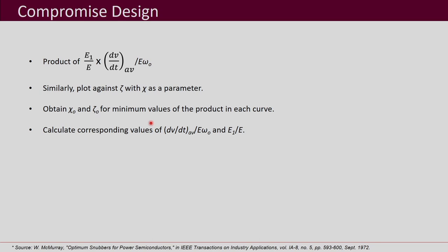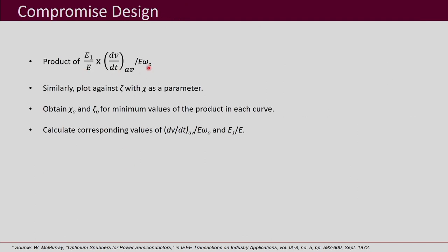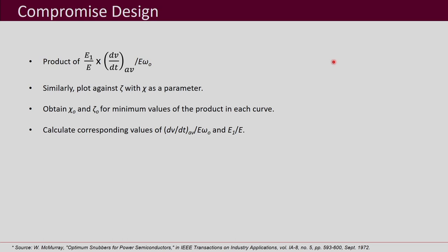We note down the corresponding value of the product and also the corresponding values of zeta0 and chi0 where the product becomes minimum. We then substitute those set of values into the expressions and obtain the corresponding values of E1/E and dv/dt average by E·omega0 — the normalized ones — both denoted with subscript 0 to indicate the minimum point.